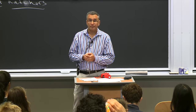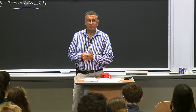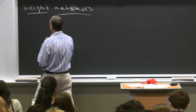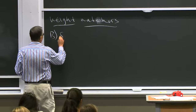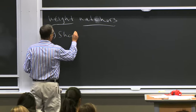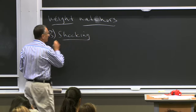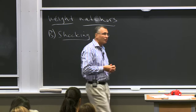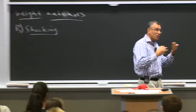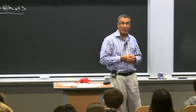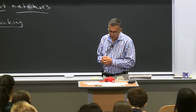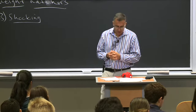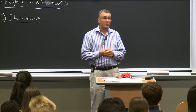Now, what happens if we shock the budget constraint? We talked about constructing them. What about shocking the budget constraint? We're going to do a lot of what we call comparative statics — making changes in one thing and seeing what it does to the system. Let's start with a change in prices. Suppose the price of pizza goes from $12 up to $18.